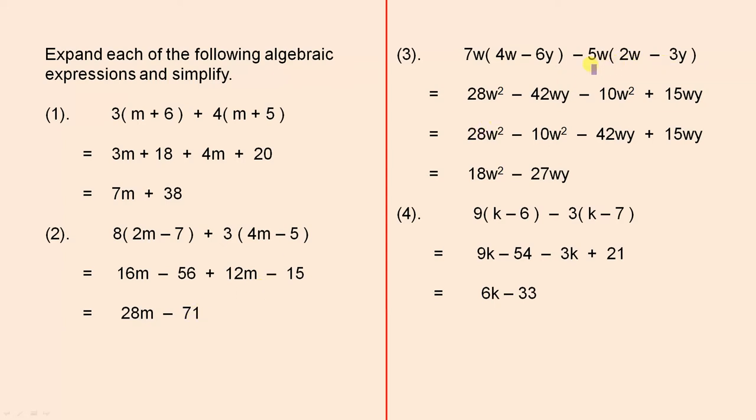Number 3. 7w times 4w is 28w squared. 7w times minus 6y is minus 42wy. Those two terms multiplied give us minus 10w squared, and those two terms gives us plus 15wy. If we just for this example only put the like terms together, so just group them together. So they're the like terms. So 28w squared minus 10w squared is 18w squared.